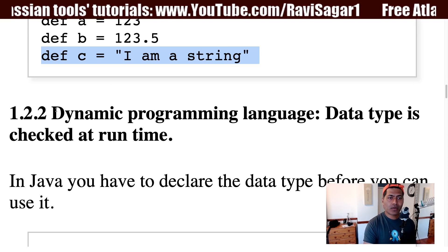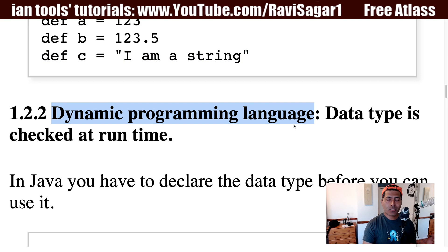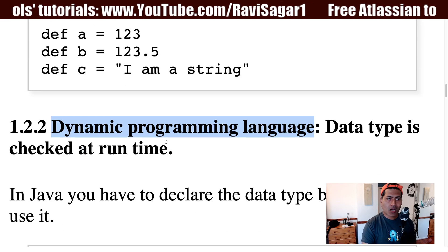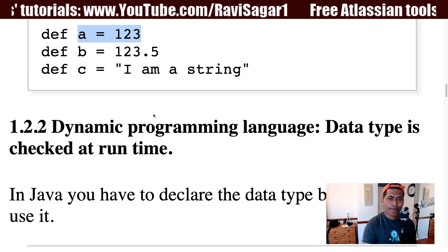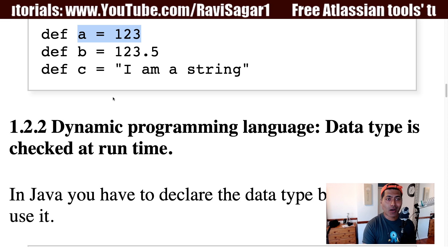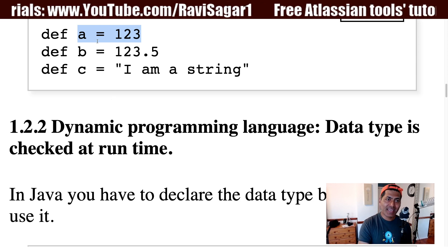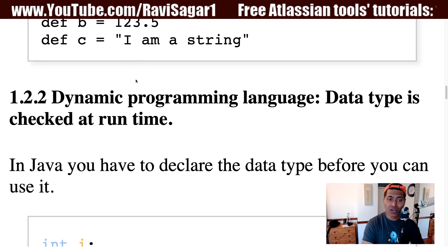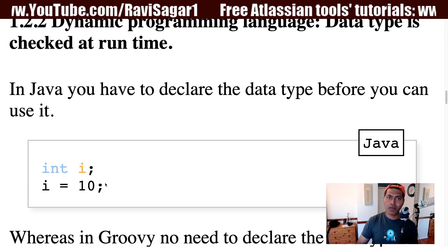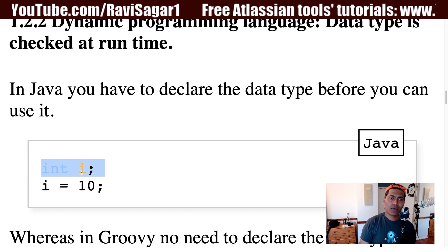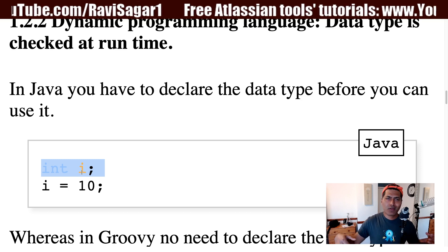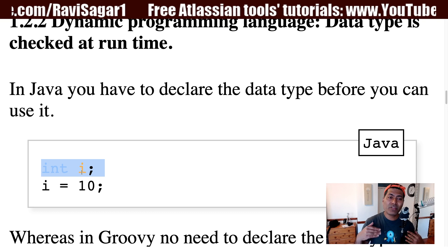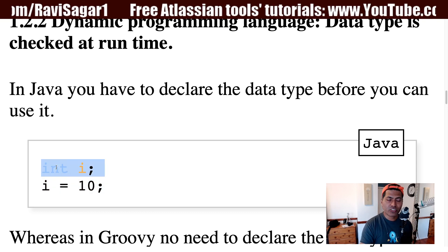Groovy is also a dynamic programming language, meaning at runtime Groovy will determine how to deal with a particular variable. For example, if a = 123, at runtime Groovy determines it is an integer. In Java, if you want to use an integer you must declare it first — for example, int i. But in Groovy, you can just write i = 10 without declaring the data type.